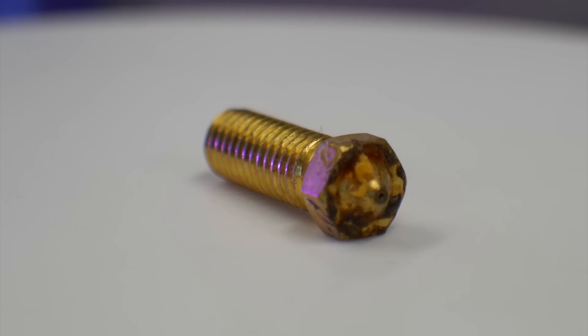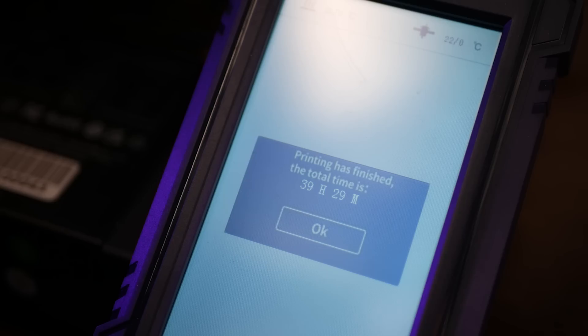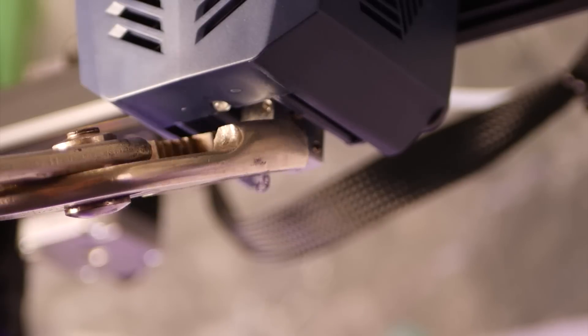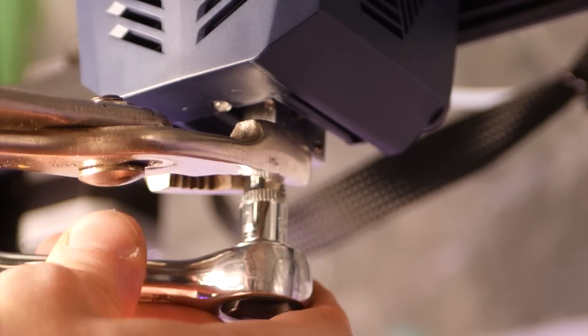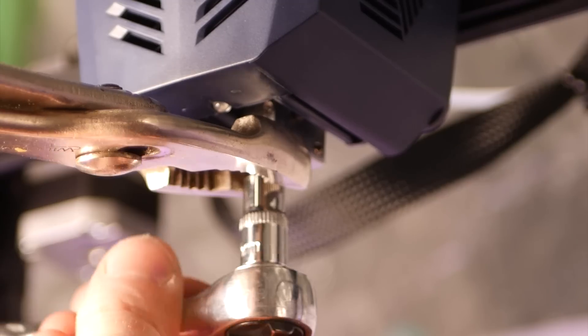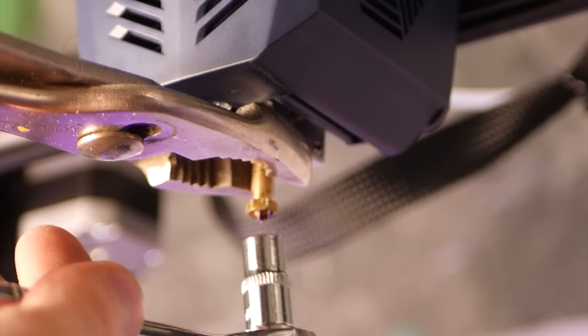Now, I'm not going to spend a lot of time tuning this thing with a 0.4 nozzle because it took over 35 hours to print this infinity cube. I think a 0.6 millimeter nozzle would be the bare minimum to use with a machine of this size unless you're looking for insane quality and don't mind print times of up to three or four days.